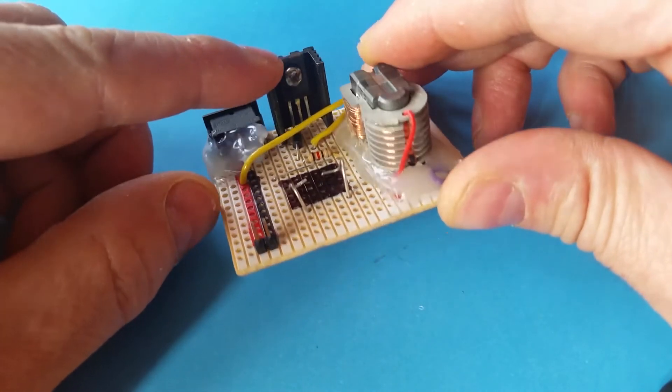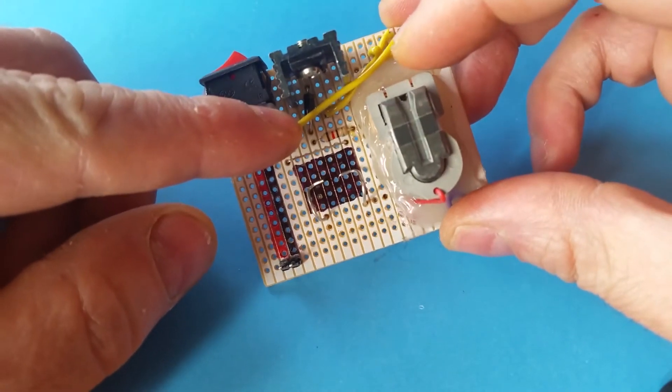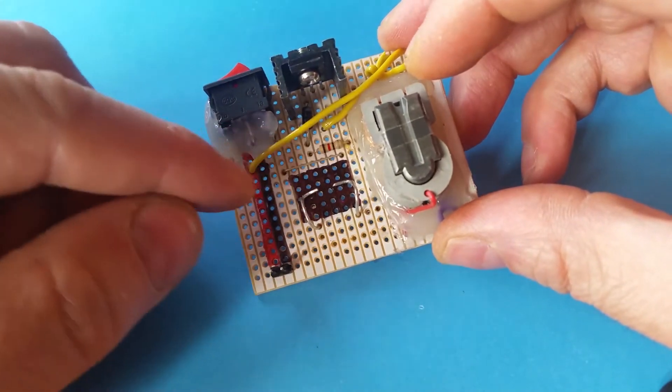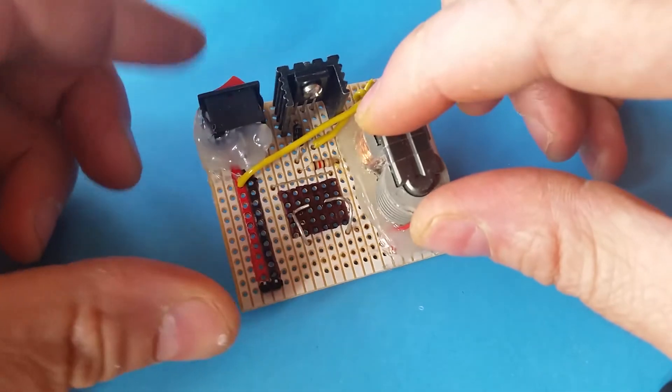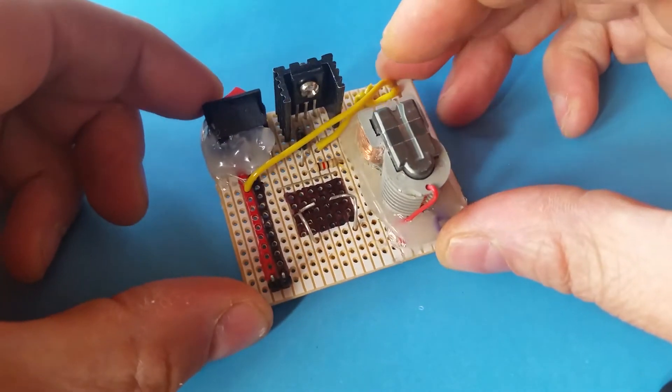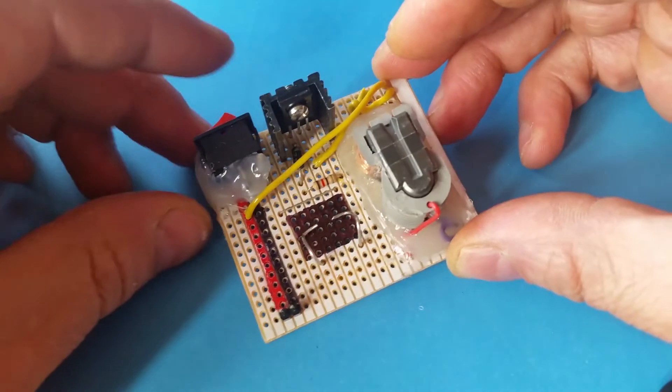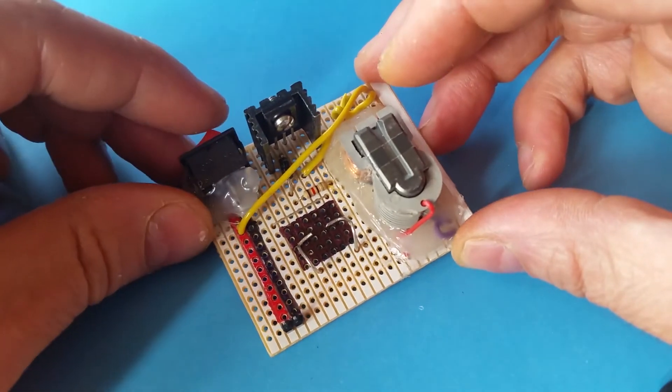So it comes with a transistor, a diode, a rectifier diode, a resistor, transformer and a switch. That's basically the kit and if you get one with a PCB it comes with a PCB and you just solder the components onto that.